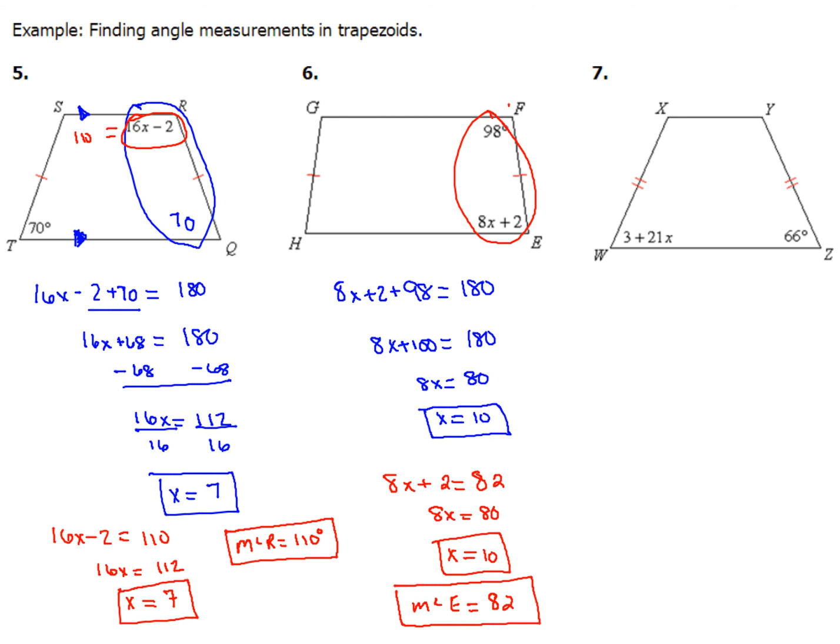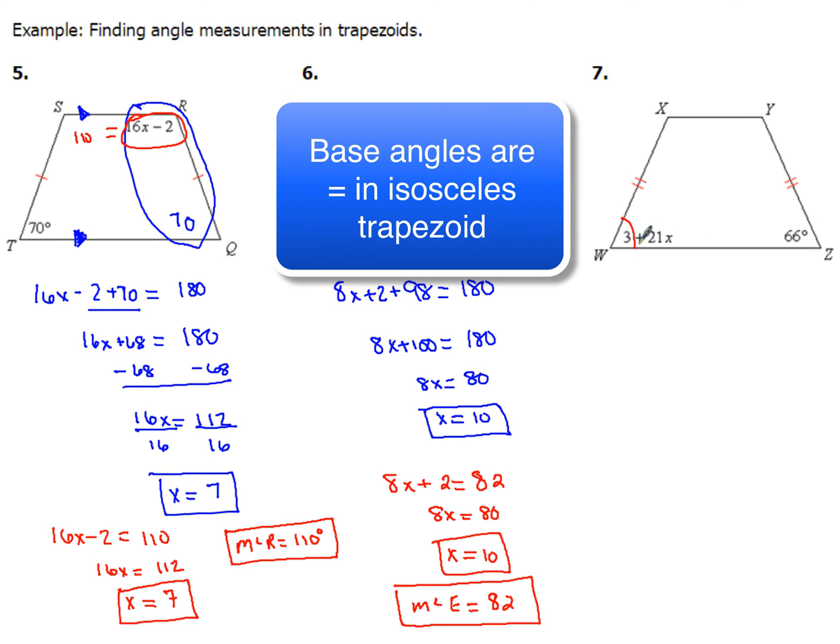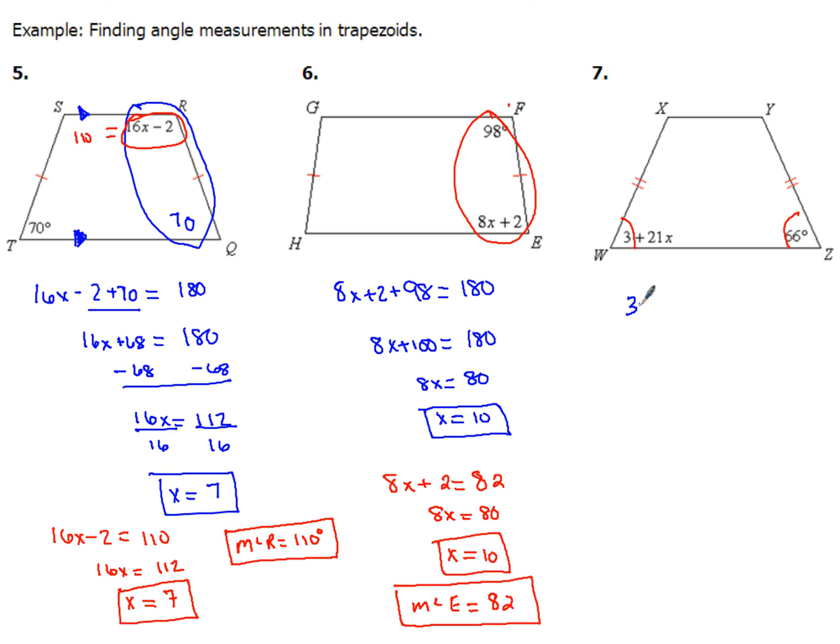Now example 7, that's our last one here. What we have to remember is that both the base angles are going to be the same. So that means that angle w and angle z, they're the same. So 3 plus 21x is going to equal 66.